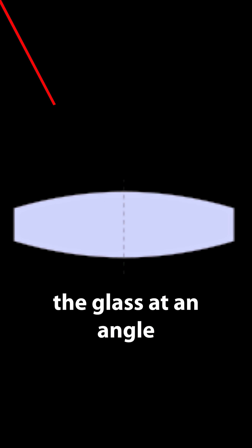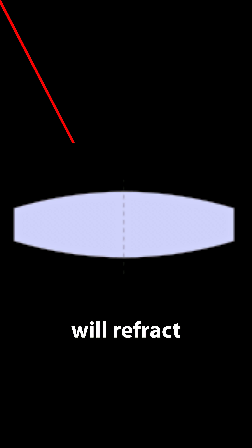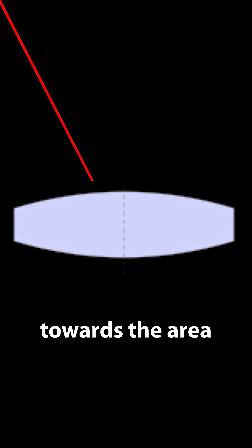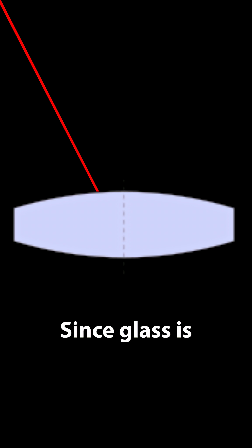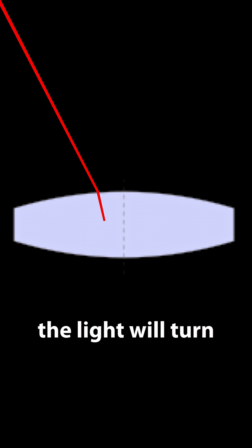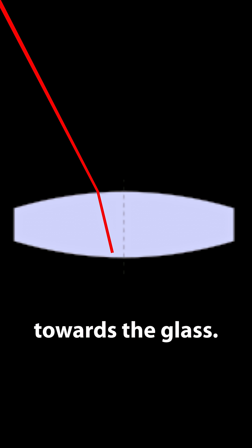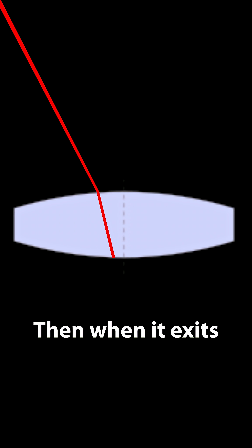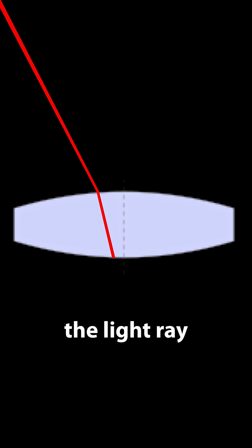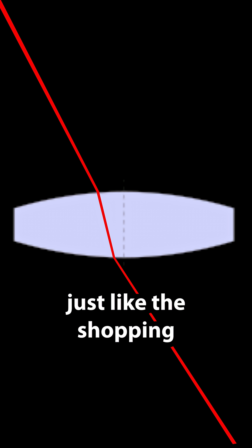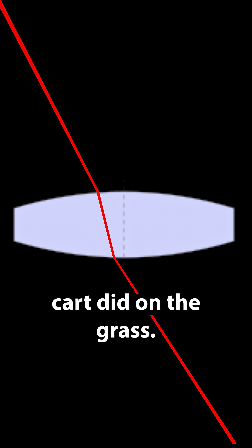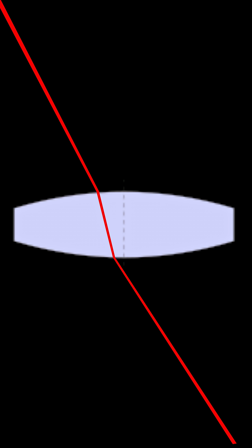Off-axis rays hitting the glass at an angle will refract towards the area with more resistance. Since glass is denser than air, the light will turn towards the glass. Then when it exits the glass, the light ray will once again turn or bend back towards the glass, just like the shopping cart did on the grass.